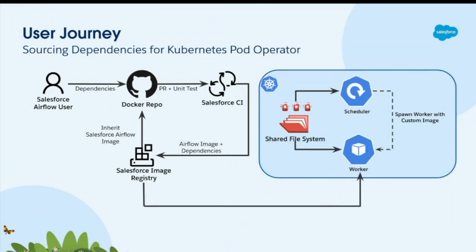The other class of users are the more savvy kind who want an increased level of customization — controlling what version of Python they run, configuring their environments and resources. For these use cases, we use the Kubernetes pod operator. All we ask is that they inherit an Airflow base image that we provide and customize it as much as they need. The scheduler runs the worker pod with these custom Docker images, which spin up the environments they need and their workflows run there.